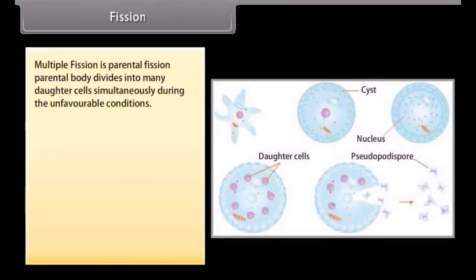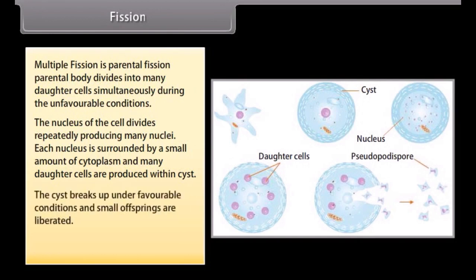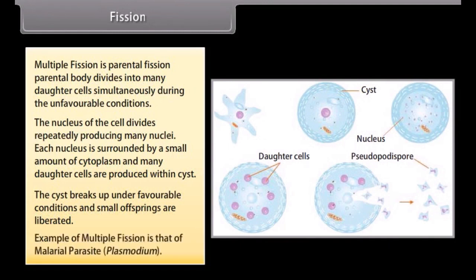Multiple fission is when the parental body divides into many daughter cells simultaneously during unfavorable conditions. The nucleus of the cell divides repeatedly, producing many nuclei. Each nucleus is surrounded by a small amount of cytoplasm, and many daughter cells are produced within a cyst. The cyst breaks up under favorable conditions and small offspring are liberated. An example of multiple fission is the malaria parasite Plasmodium.